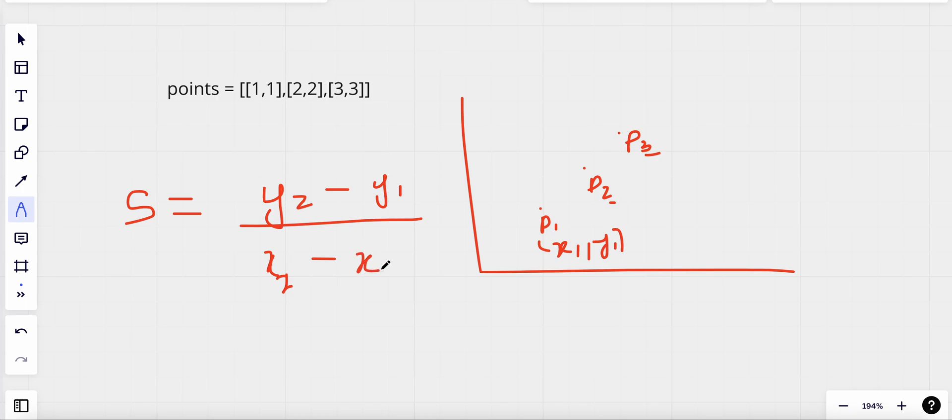So this is the formula of slope. We could replace these y2, y1 with y3, y2, x3, and x2 - that's just one way to do that. Now what does this slope tell us? Basically, the